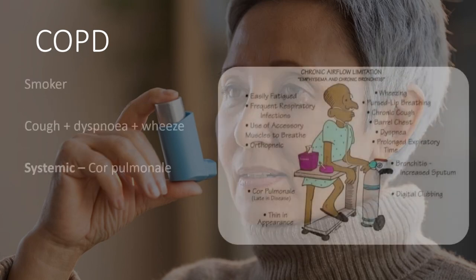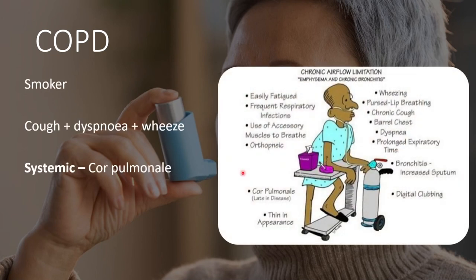Symptom-wise, patients are usually smokers, older than 45. They'll have a cough, shortness of breath, possible wheeze, clubbing, and increased sputum. If long-term enough, there can be systemic complications such as right heart strain and cor pulmonale.